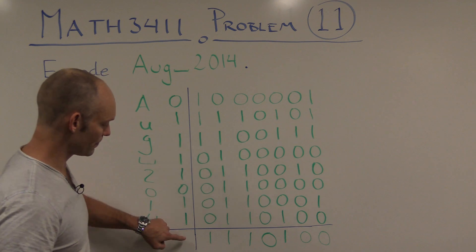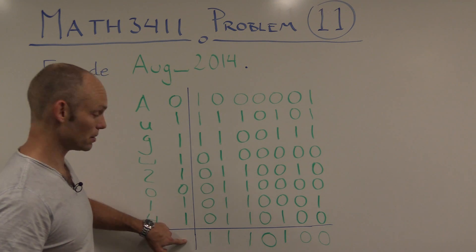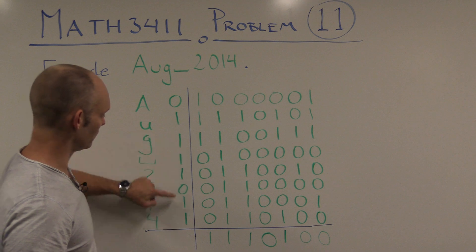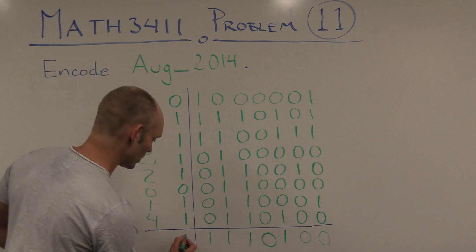And finally, we just need to have the check bit here. So counting through this row, we get a 0.